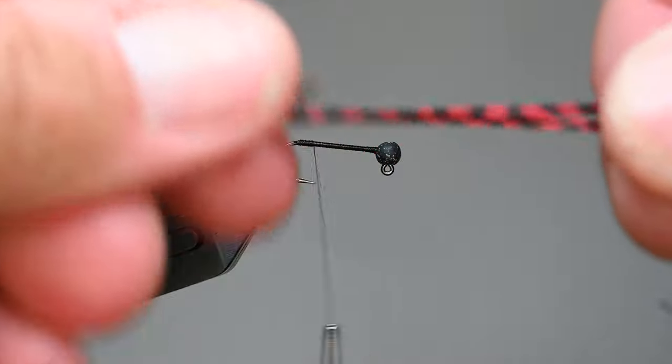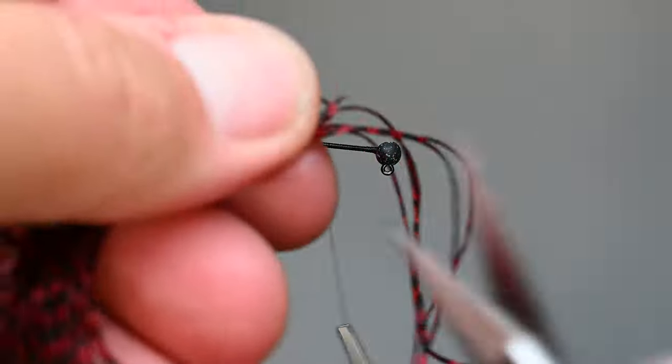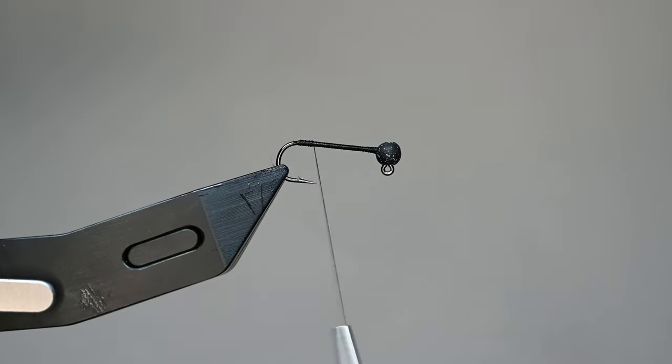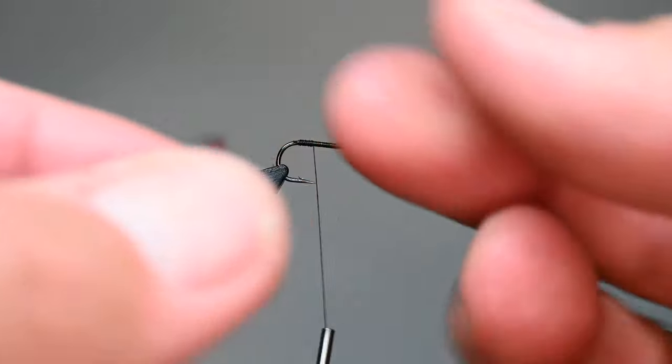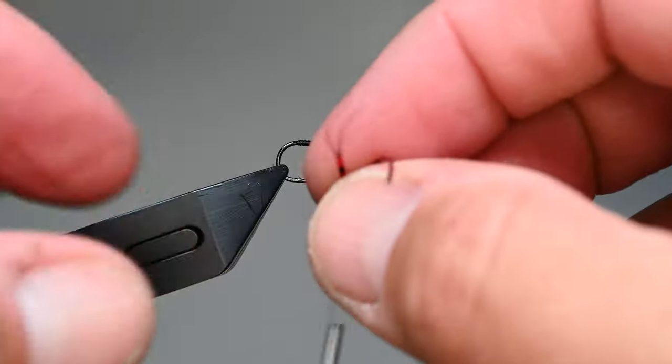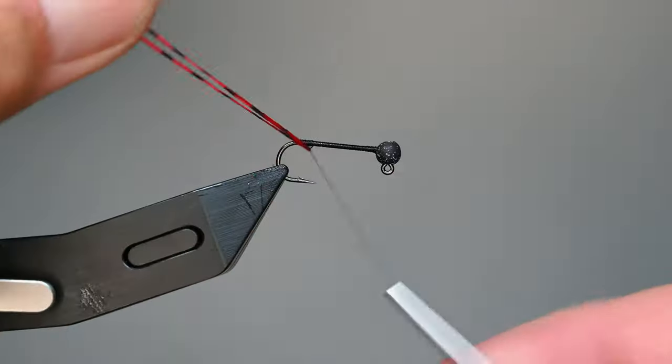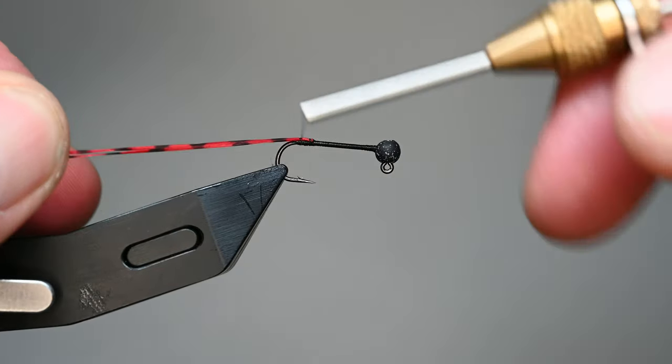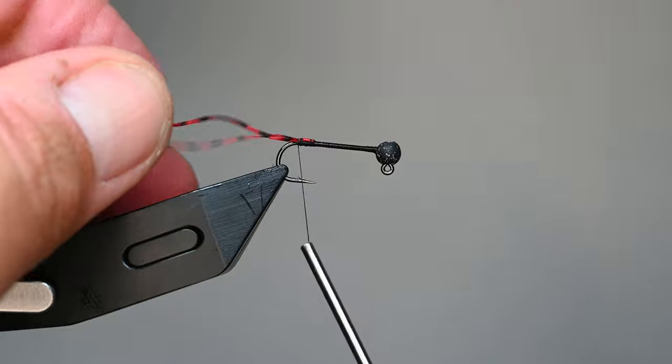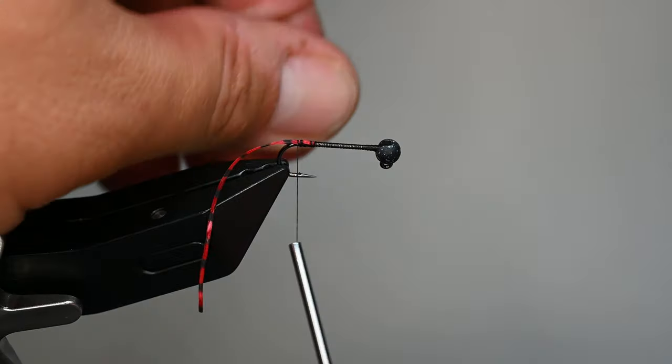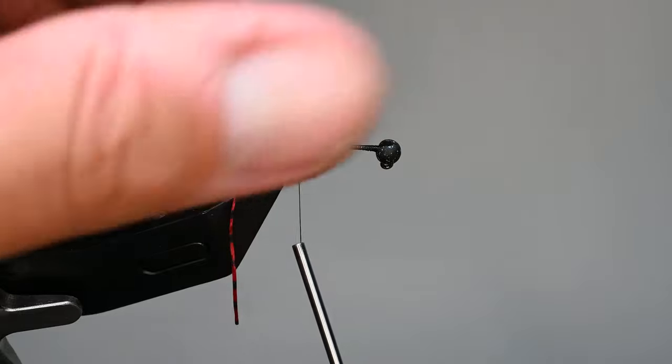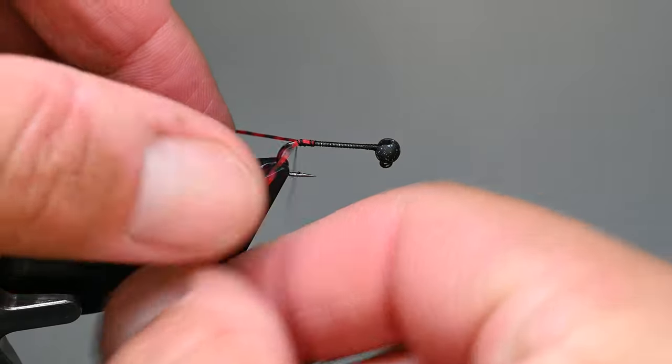Each thread wrap just kind of slides right next to each other and we'll stop right at the bend. We'll trim out that tag end and then I'll advance my thread back up to the hook point so we can have a little bit of room to tie in our tail. Now for this, I apologize, I've used a bunch of different materials for these legs.